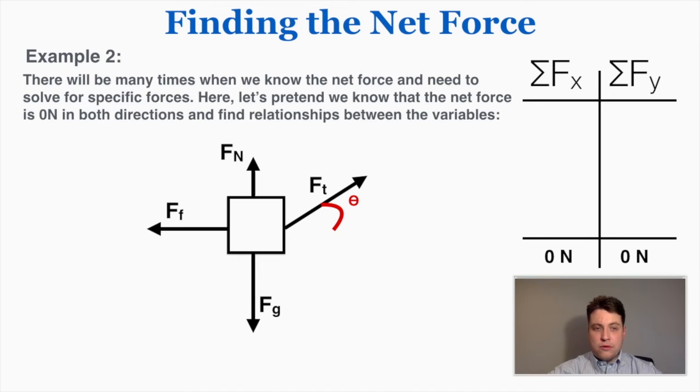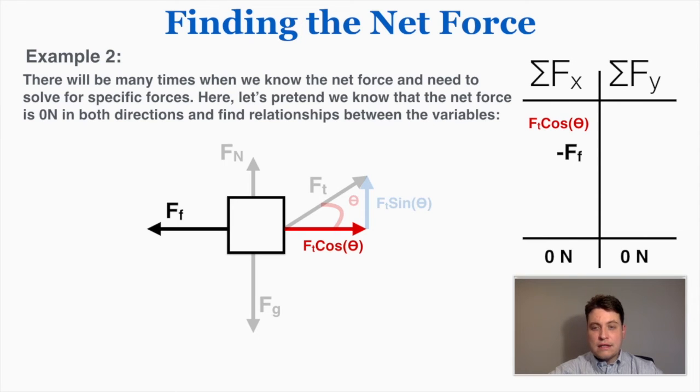There will be many times when we know the net force and need to solve for specific forces. Here we're going to pretend we know the net force is zero in both directions and find relationships between the different variables. Looking at this problem, I can see that I have one force that has an angle, so I'm going to break it down into its x-component and its y-component and then look at what's happening in the x-direction. I can see again, if I'm considering right to be positive, I'm going to record that first number as positive and the force of friction pointing to the left as negative.